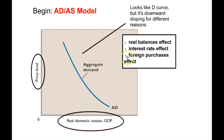The foreign purchases effect is actually kind of like a substitution effect. As our price level within the United States goes up, goods from other countries that we could buy as imports start to look more desirable. So we might, in fact, purchase more foreign goods rather than domestic goods. And since we're measuring domestic output and domestic demand here, that's not going to be helpful to us.